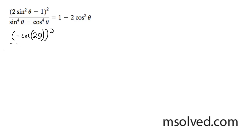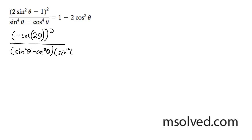What we're going to do here is on the denominator, we're going to split this up into sine squared theta minus cosine squared theta, and then sine squared theta plus cosine squared theta.